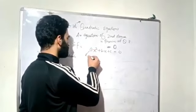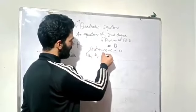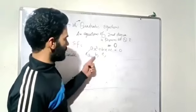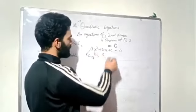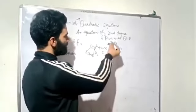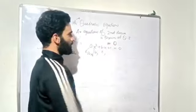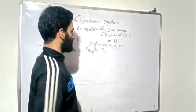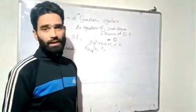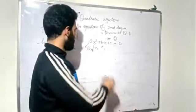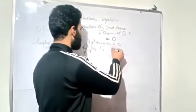Here, A, B, and C are real numbers. This is a quadratic equation in one variable x. It has terms of degree 1 and degree 2, but the highest degree is 2, making it quadratic. A, B, C are real numbers, and the most important point is that A is not equal to 0.